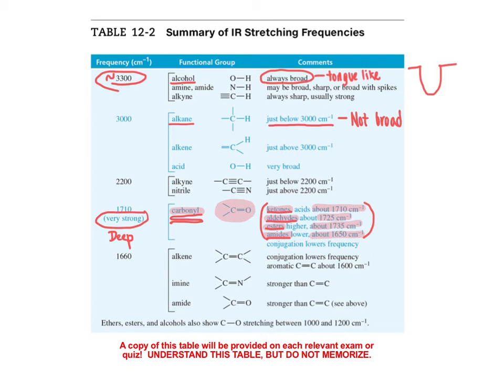Instead, the broadness of that signal is going to be similar to the other signals that you see within the spectrum. The alcohol signal will be notably more broad, more tongue-like than the other signals in the spectrum.